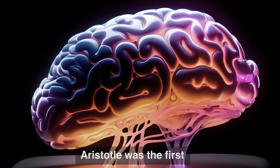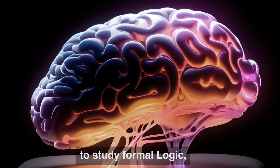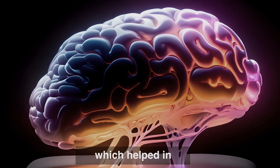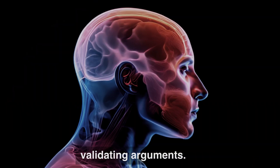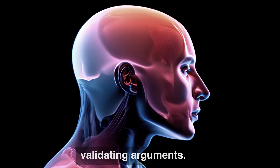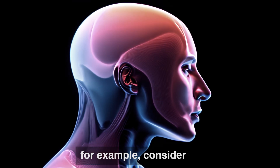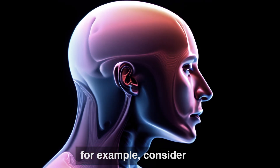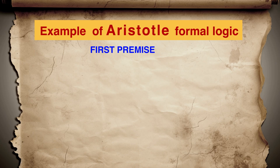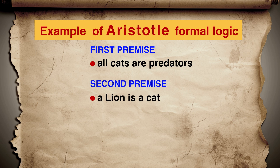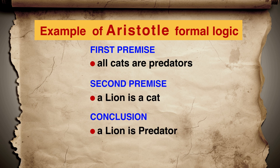Aristotle was the first to study formal logic, which helped in validating arguments. For example, consider the argument. Premise 1: All cats are predators. Premise 2: A lion is a cat. Therefore, the conclusion is a lion is a predator.